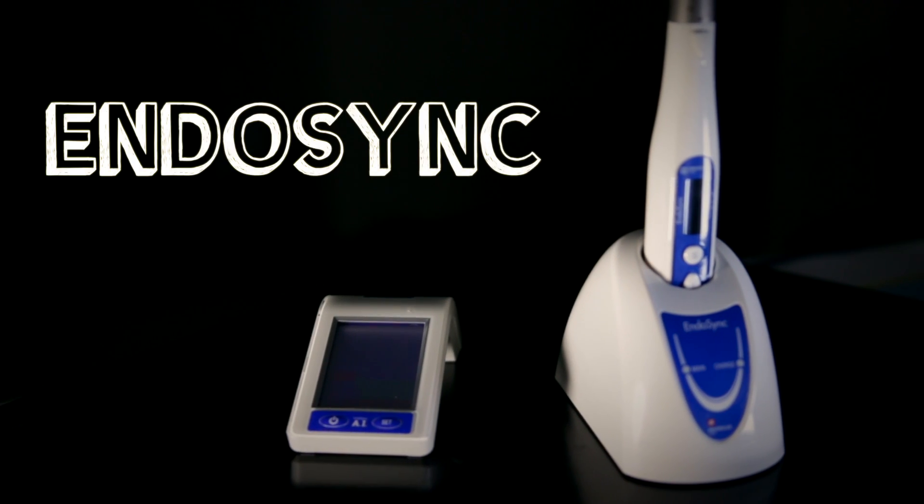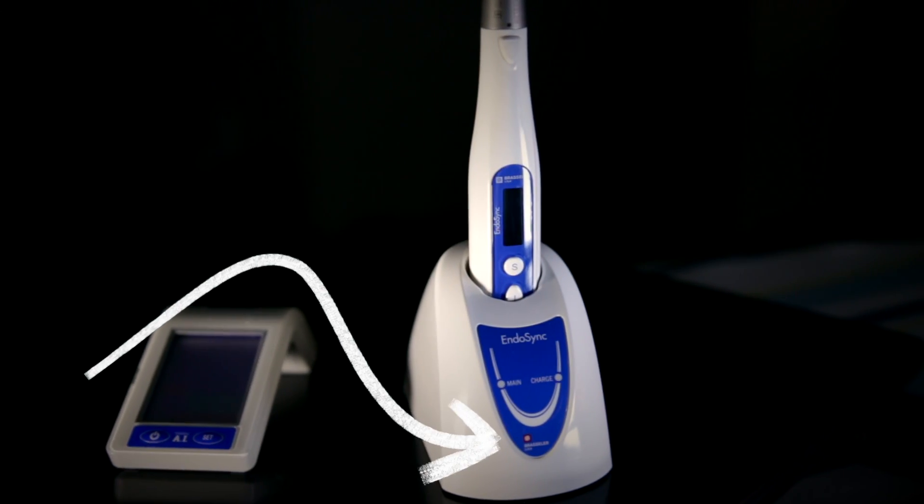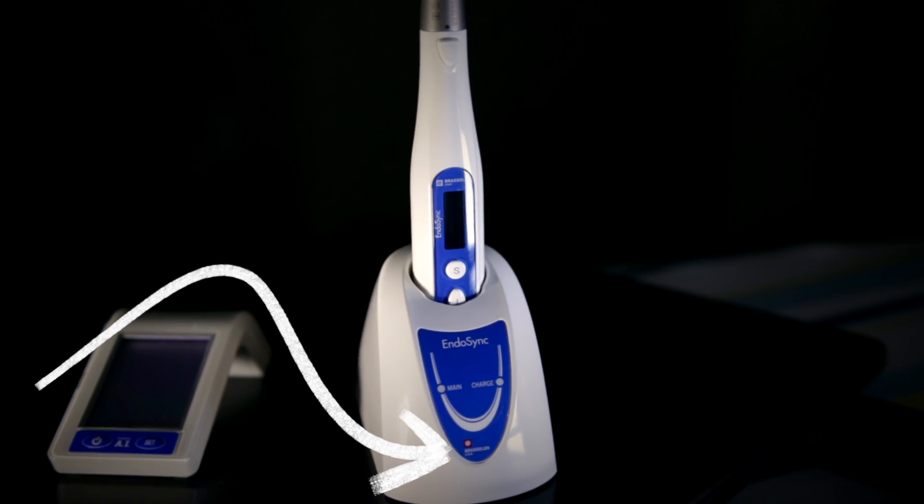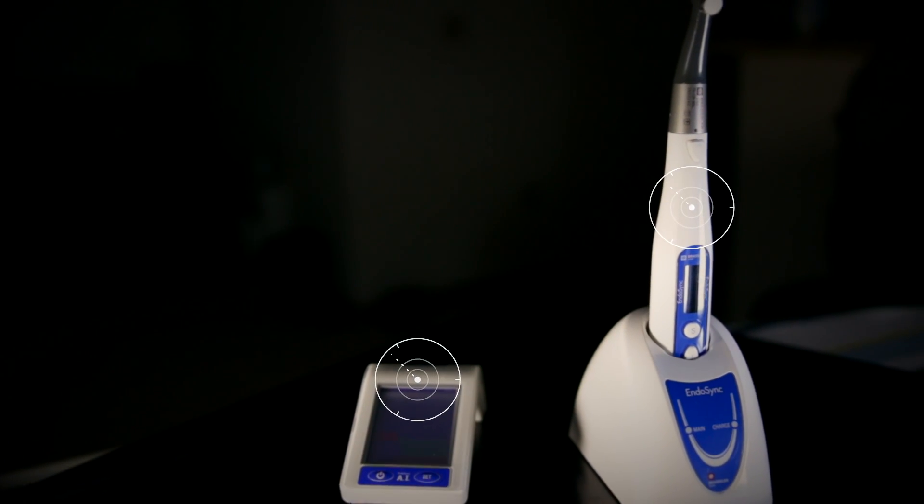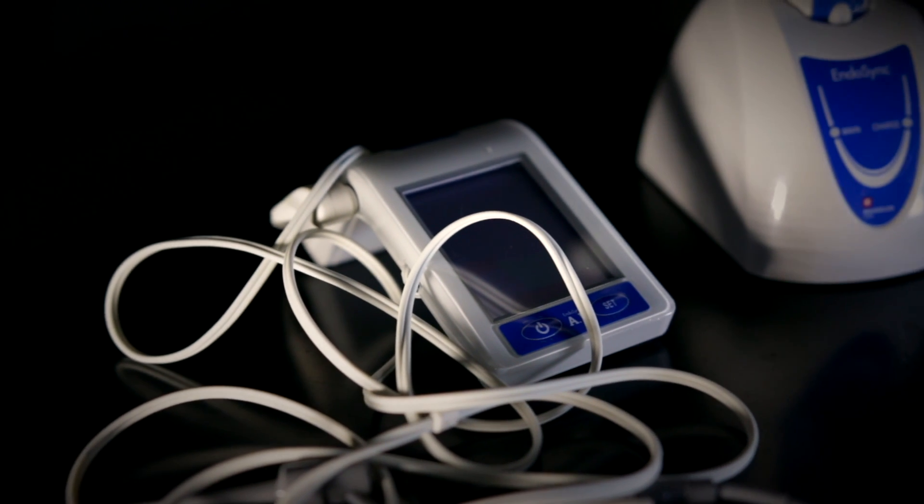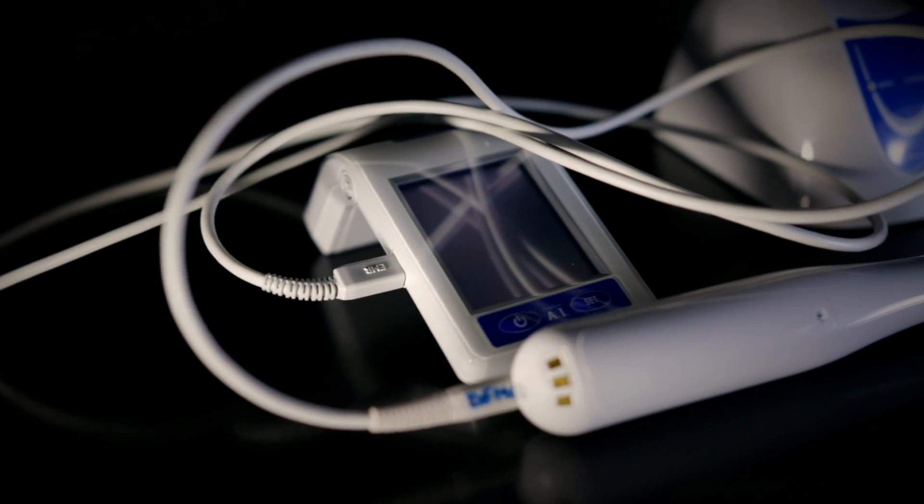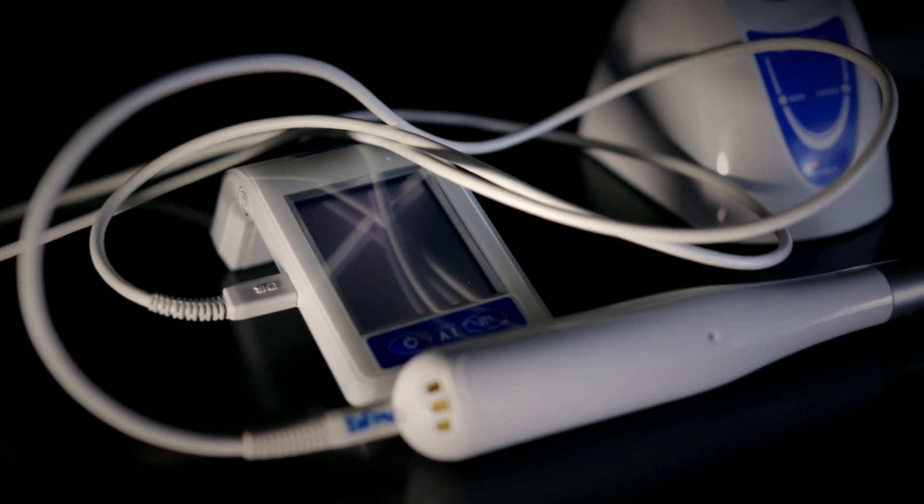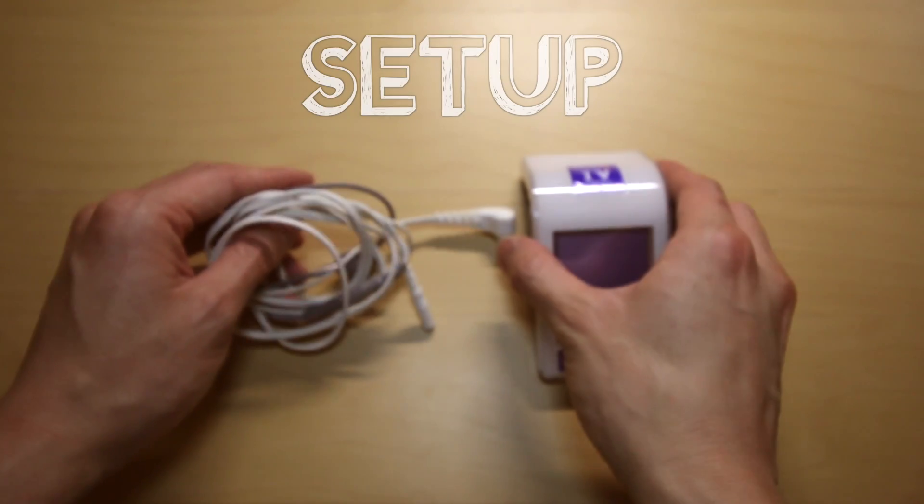Endosync is a product system made by Brassler. It includes two independently functioning devices: an apex locator and a cordless endomotor. But they can also work in conjunction with each other. There's a wire that connects from the endomotor to the apex locator so you can use both functions at the same time.